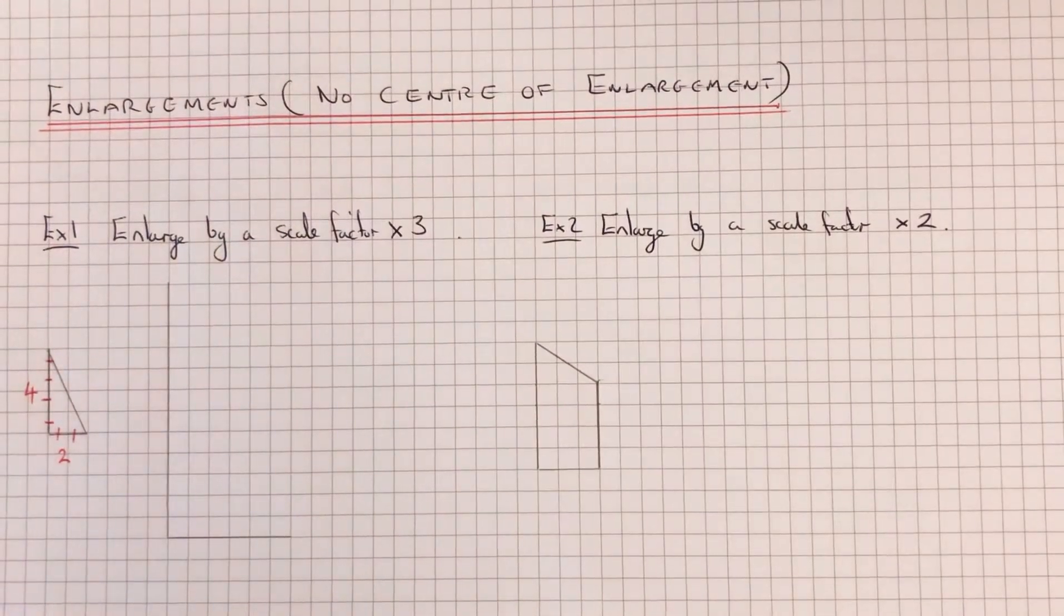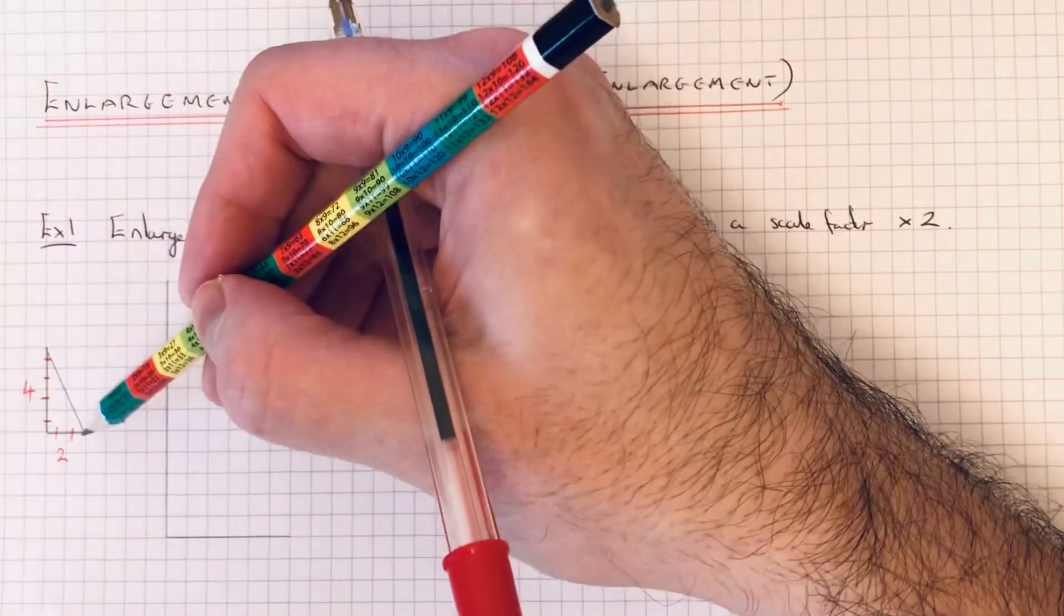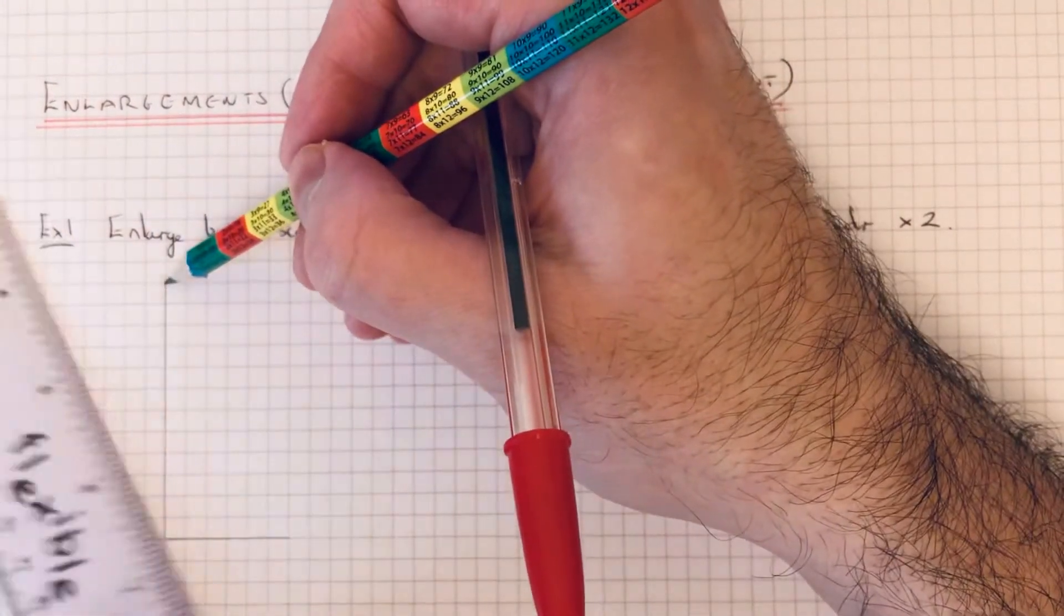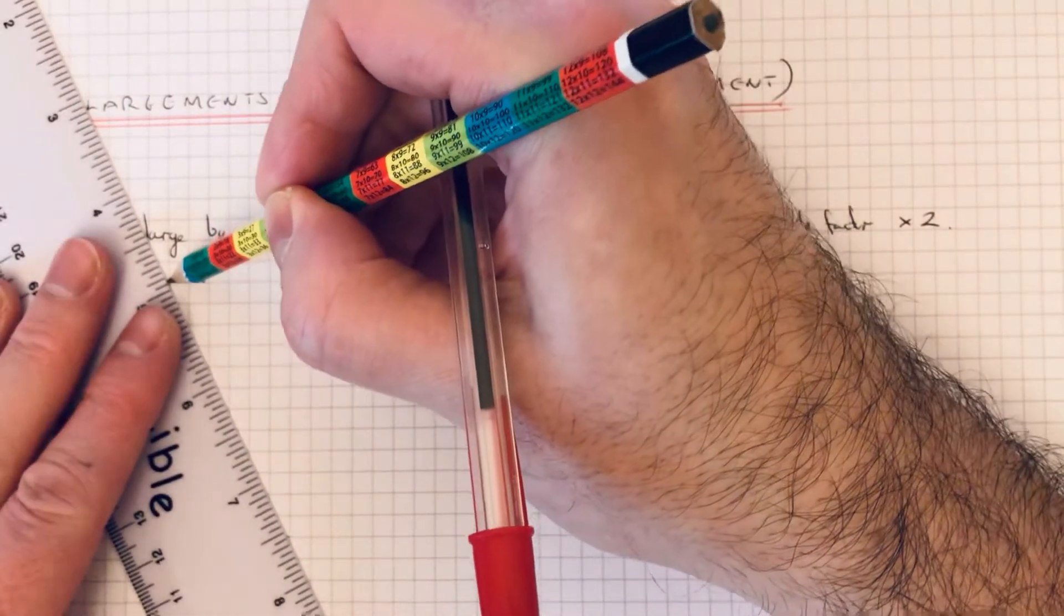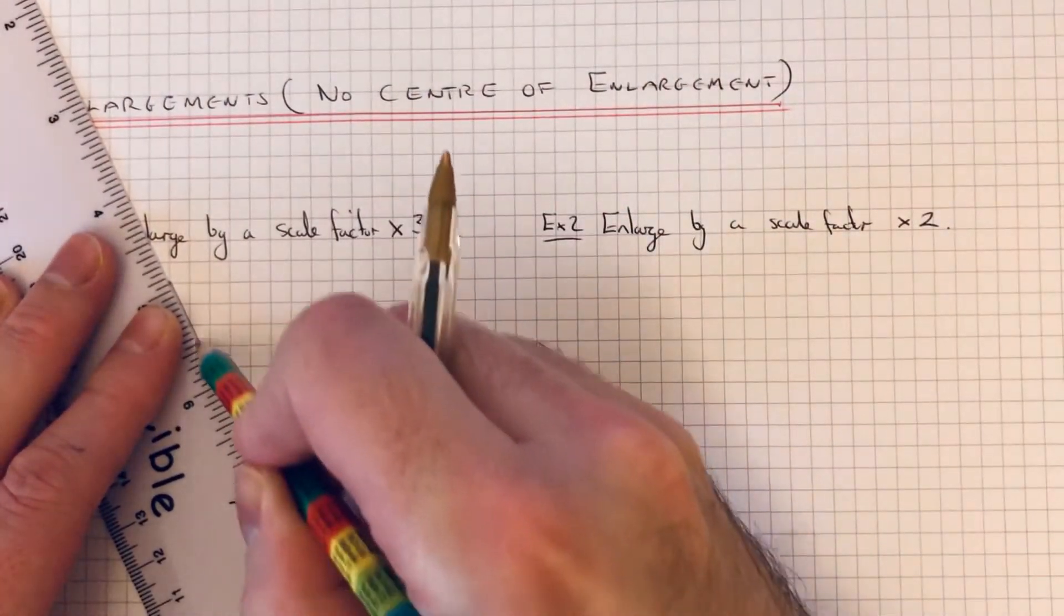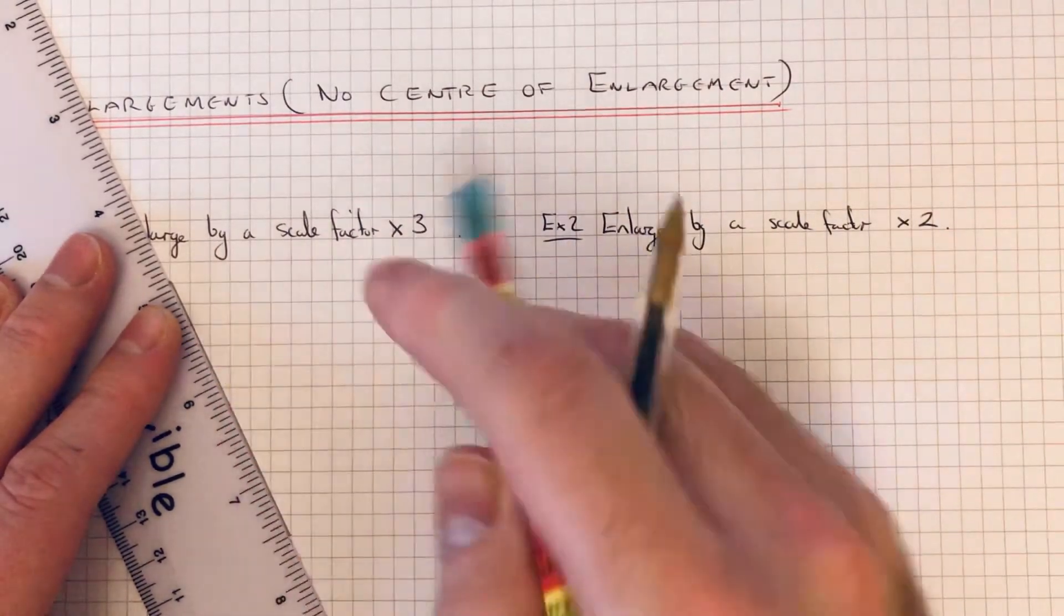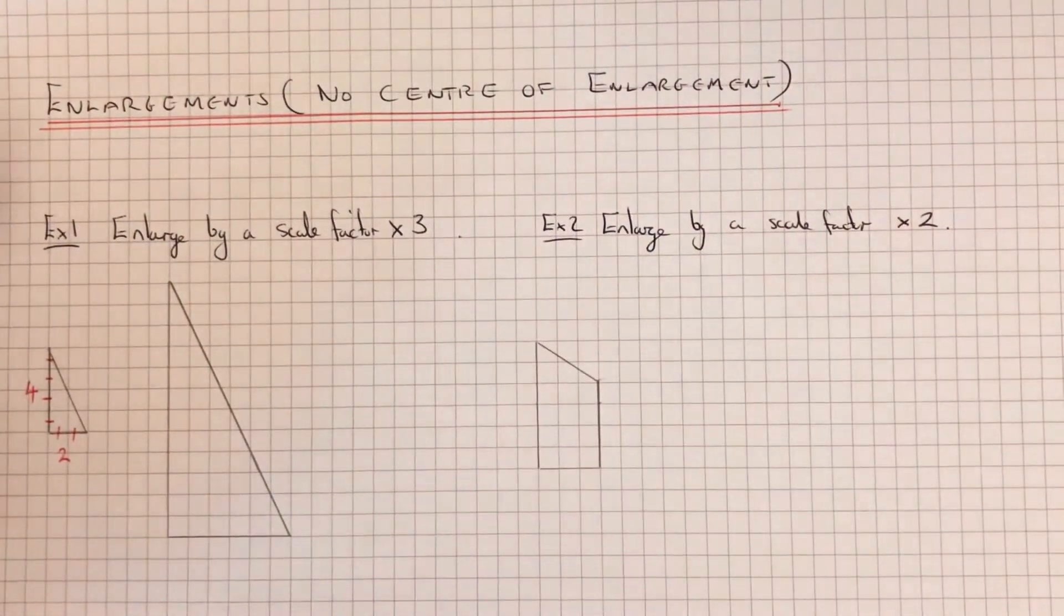And finally we just need to do the sloping edge. So we don't need to measure this one. We just join up our two corner points. And there's our enlarged shape.